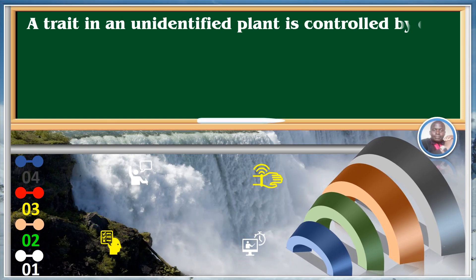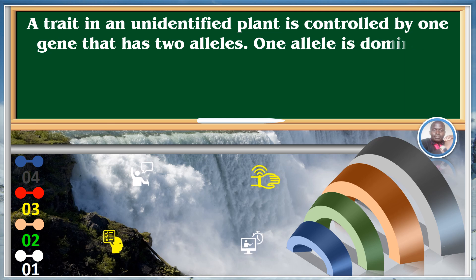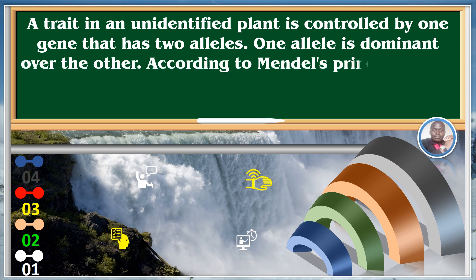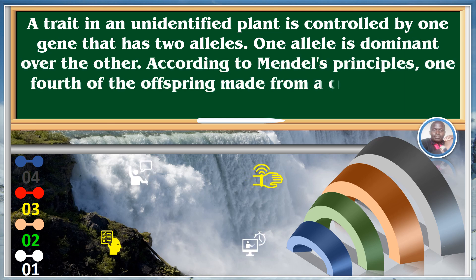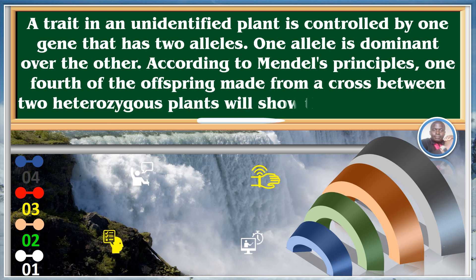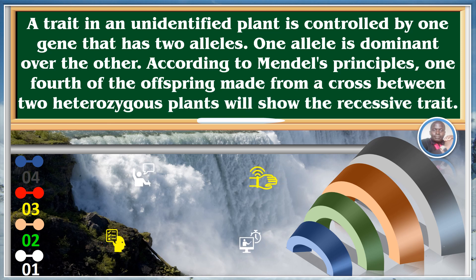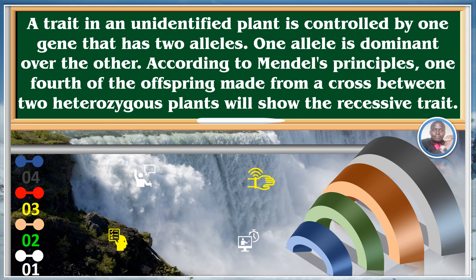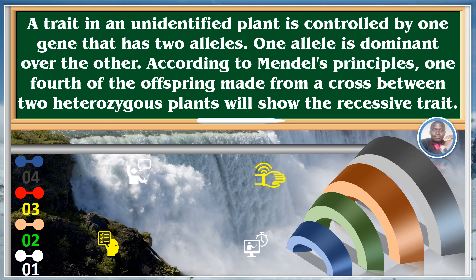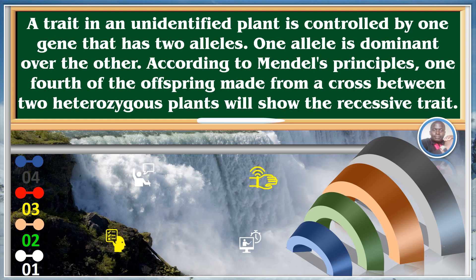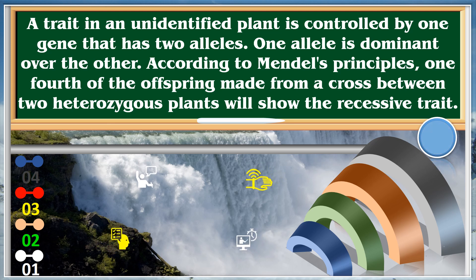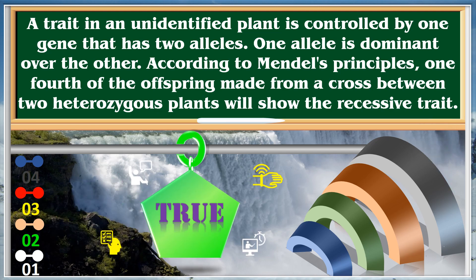A trait in an unidentified plant is controlled by one gene that has two alleles, and one allele is dominant over the other. According to Mendel's principles, one-fourth of the offspring made from the cross between two heterozygous plants will show the recessive trait. True.